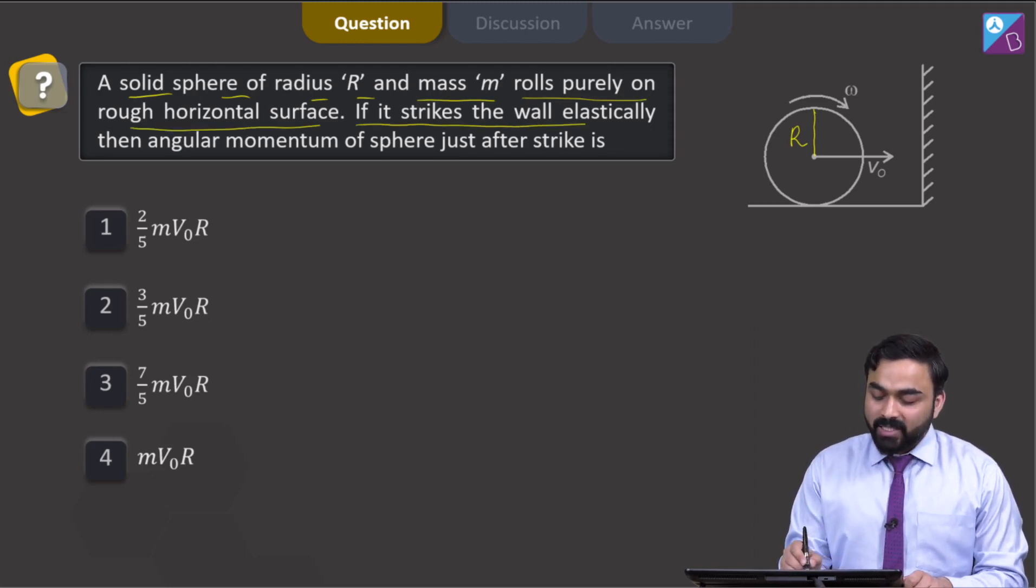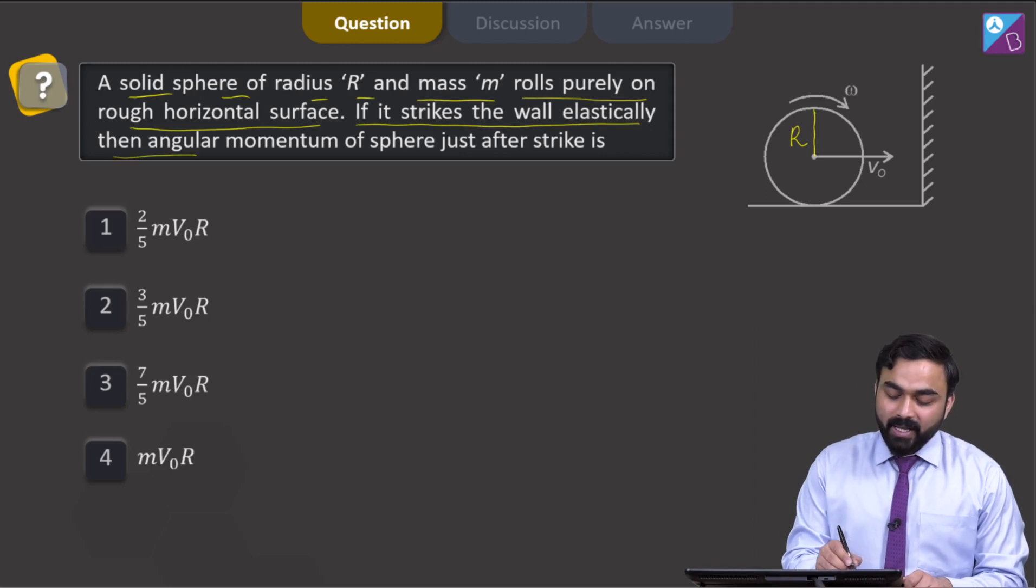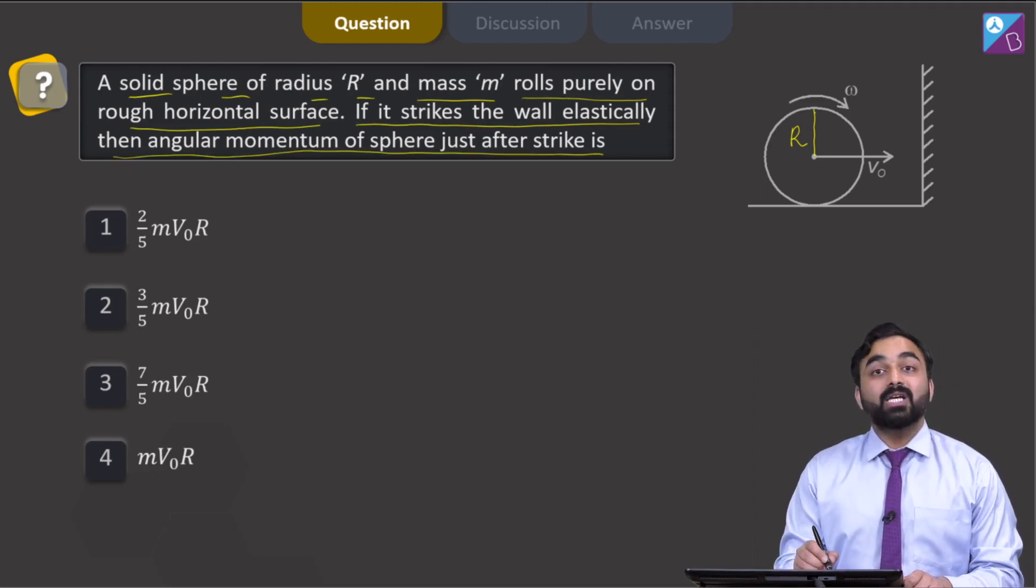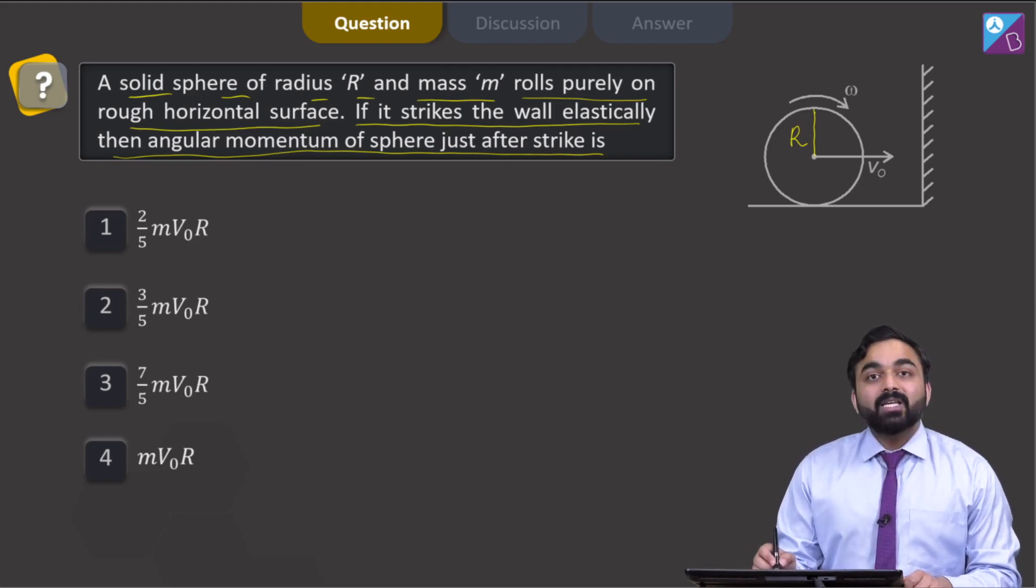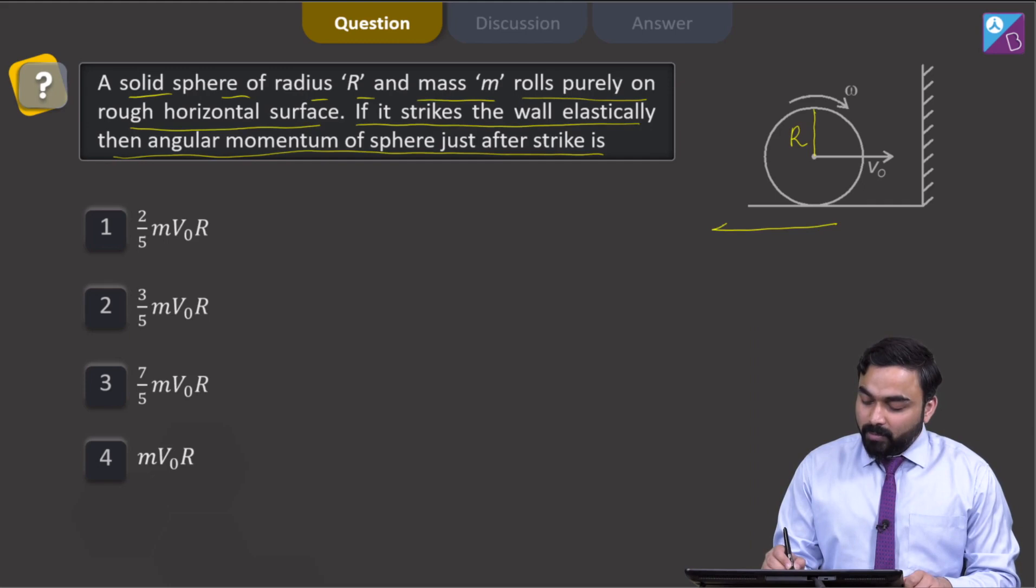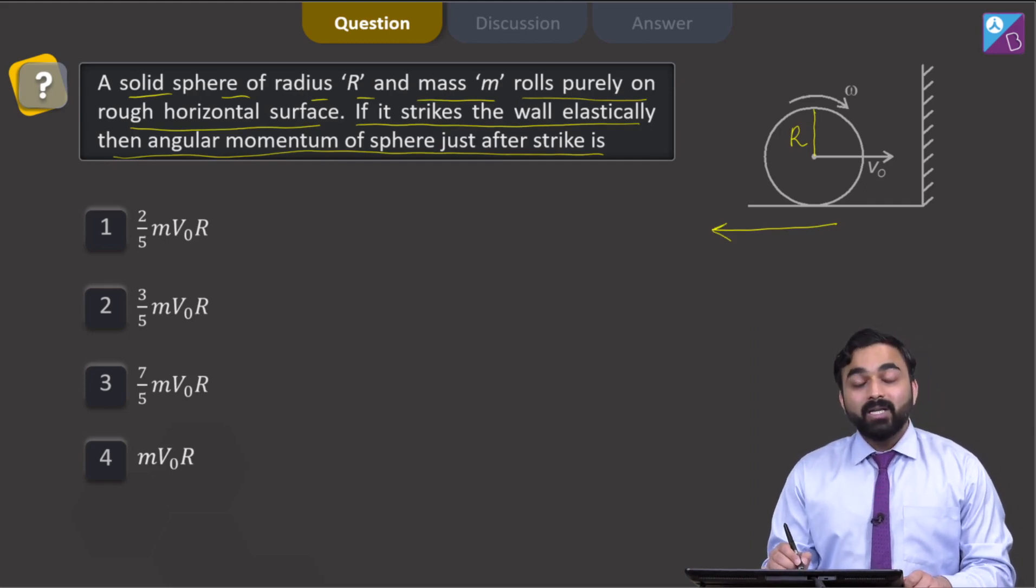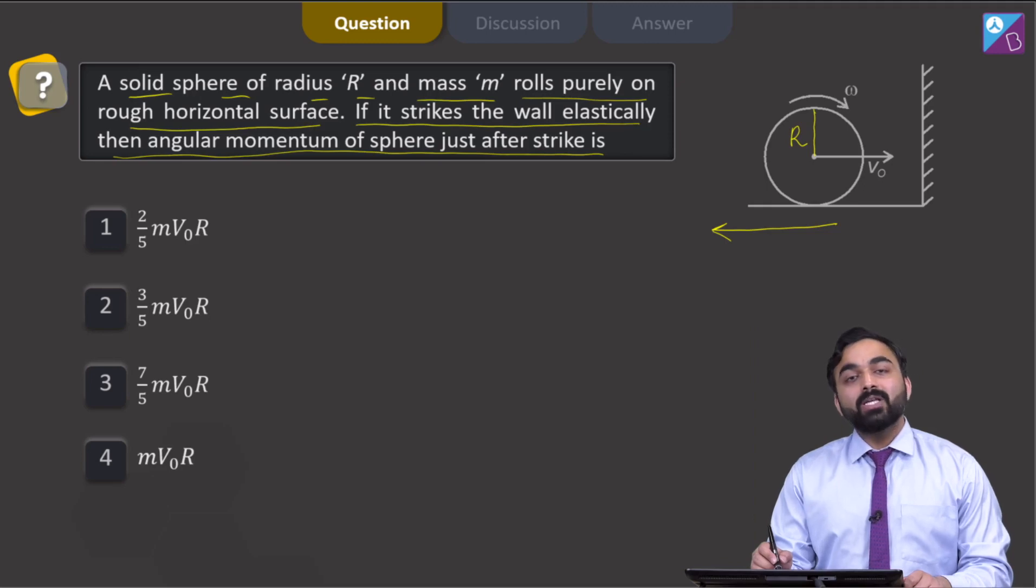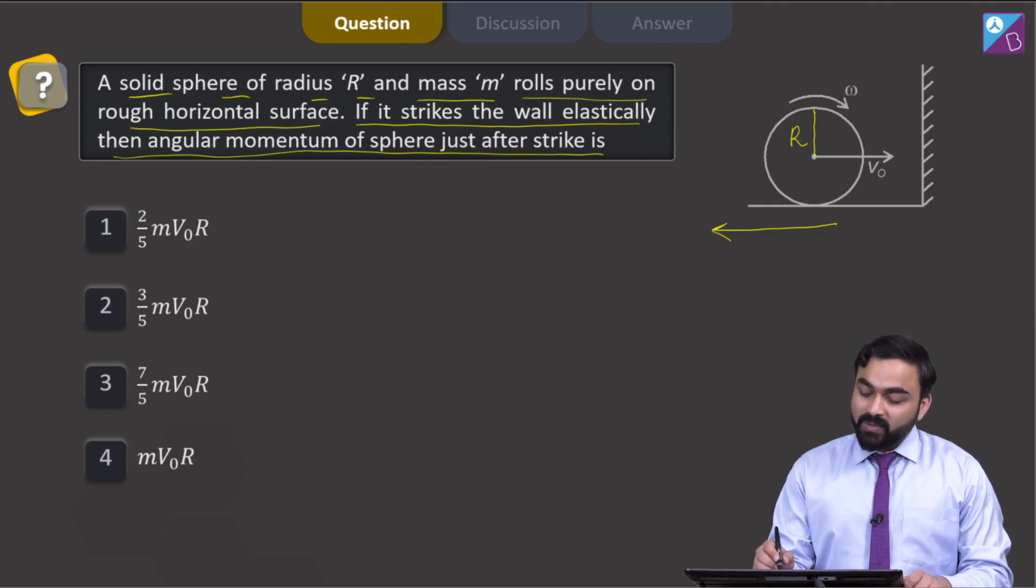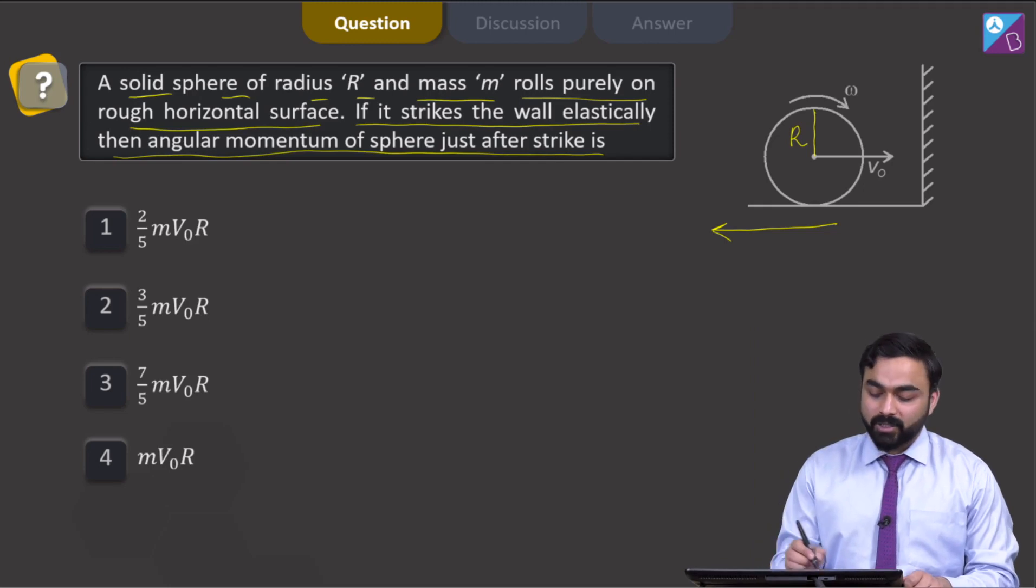If it strikes the wall elastically, then angular momentum of sphere just after the strike. So student, when this solid sphere will be striking the wall, after striking the wall it will be moving backwards but the sphere will still be performing the clockwise rotation.